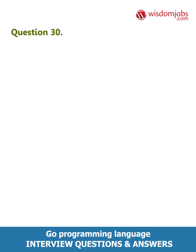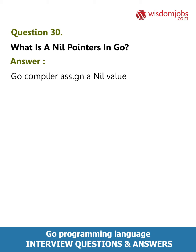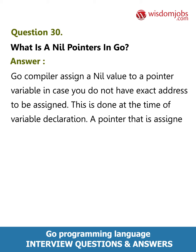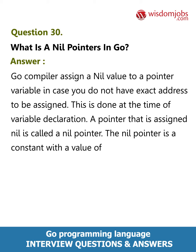Question 30: What is a nil pointer in Go? Answer: The Go compiler assigns a nil value to a pointer variable when you do not have an exact address to be assigned. This is done at the time of variable declaration. A pointer that is assigned nil is called a nil pointer. The nil pointer is a constant with a value of zero, defined in several standard libraries.